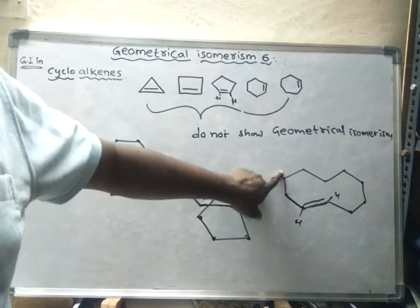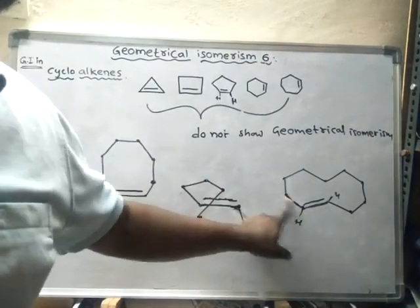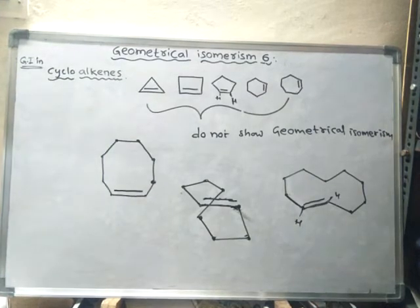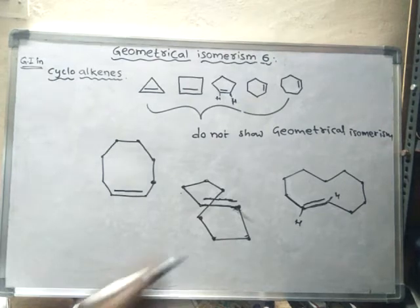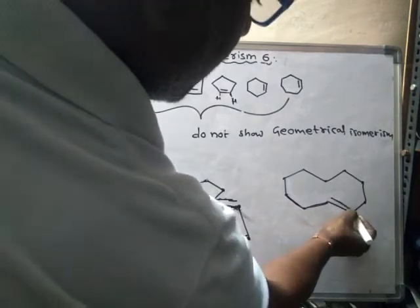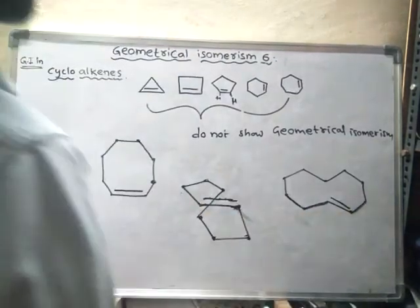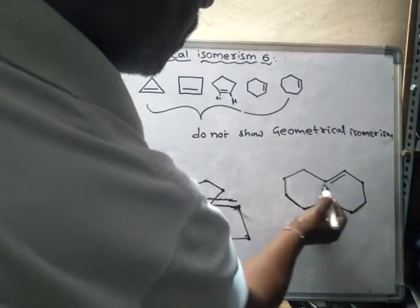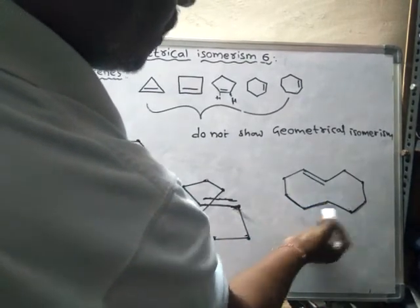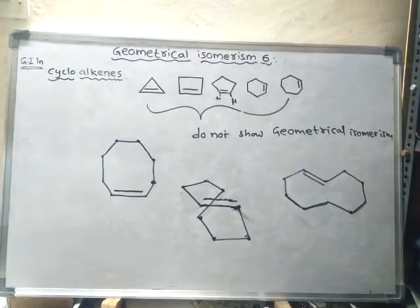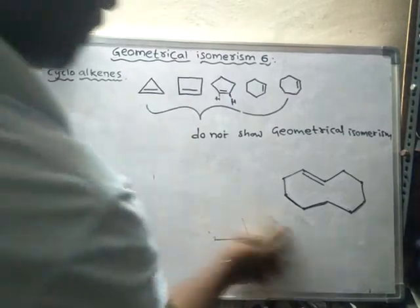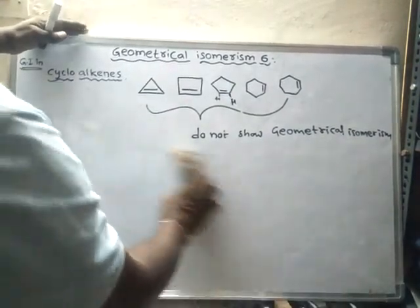At some positions the groups are opposite, making trans isomerism possible. At other positions, the groups are on the same side, making it cis. So for a 10-carbon ring, at four positions trans is possible and at other positions cis is possible. Minimum 8 carbons are necessary for cycloalkenes to undergo geometrical isomerism.